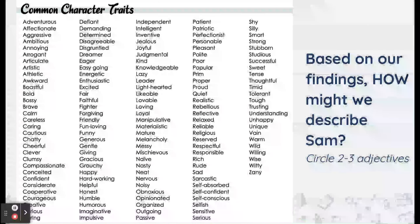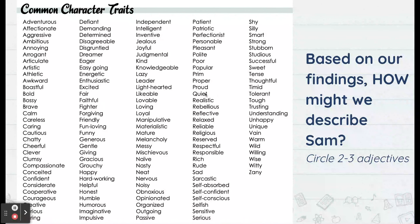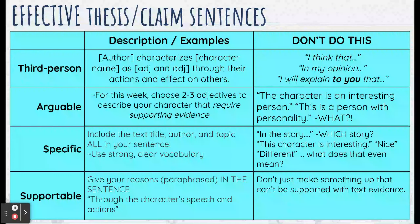So if we were describing, say, Henry, you'd think: what is he? Is he quiet? Well, I don't think so. But you would pick two or three adjectives from this list or other ones you want to pick, and that's what you're going to argue — so somebody could say, 'Hmm, is he really that way? I don't know.' Alright, so third person and arguable — we're clear on that.